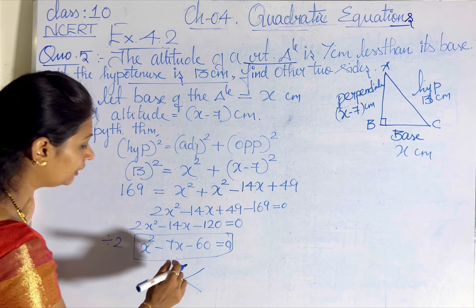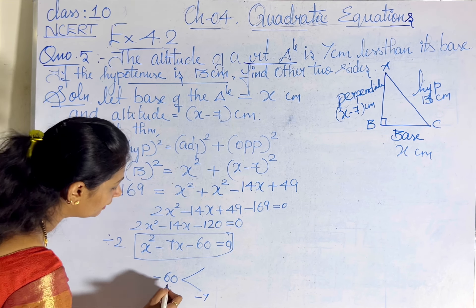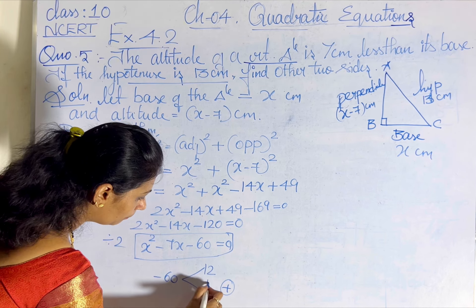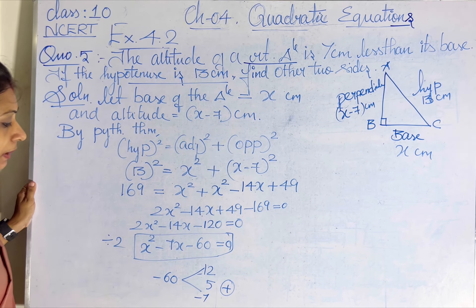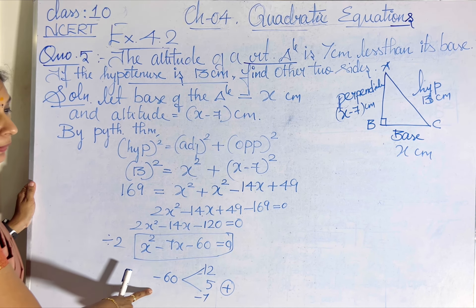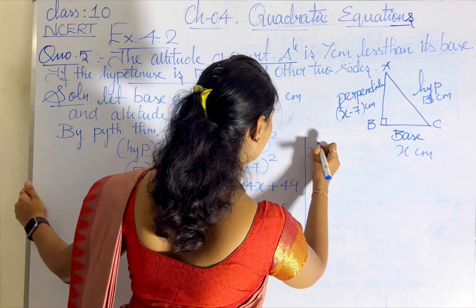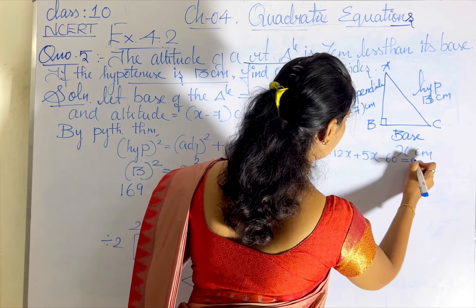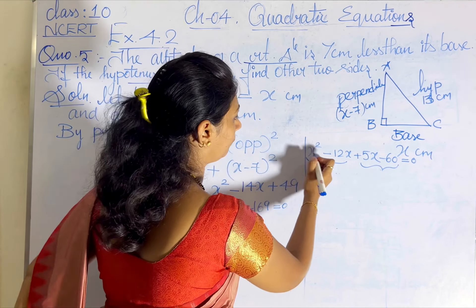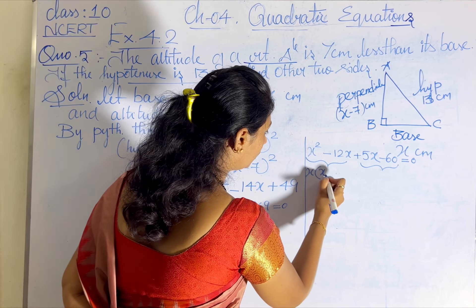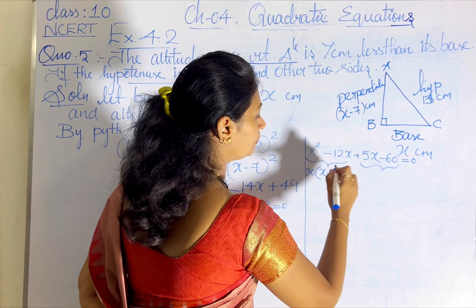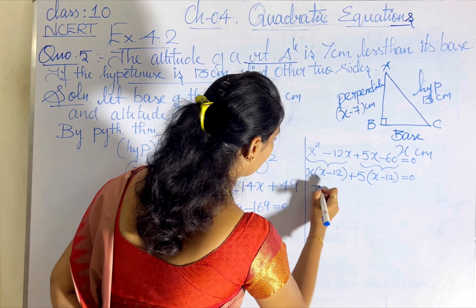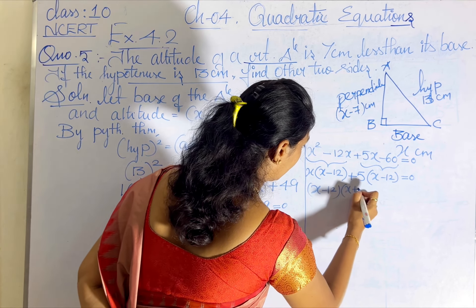Let me factorize by splitting the middle term. We need two integers whose sum is minus 7 and whose product is minus 60. Those numbers are minus 12 and plus 5, since minus 12 plus 5 equals minus 7, and minus 12 times 5 equals minus 60. Splitting the middle term: x squared minus 12x plus 5x minus 60 equals 0. Taking x as common from the first two terms gives x(x minus 12), and taking 5 as common from the last two terms gives 5(x minus 12). So the factors are (x minus 12)(x plus 5) equals 0.